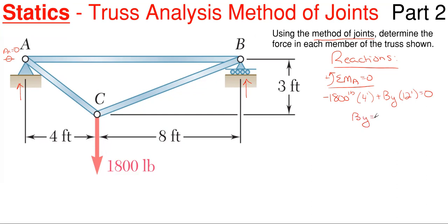And then B sub Y pops out to be 600 pounds in that upward direction. So I know this reaction over here is 600 pounds. And then what I can do is I can sum forces in the vertical direction or sum forces in the Y direction and get AY, which would just be 1800 minus 600, which has to be 1200 pounds in the upward direction for A sub Y.